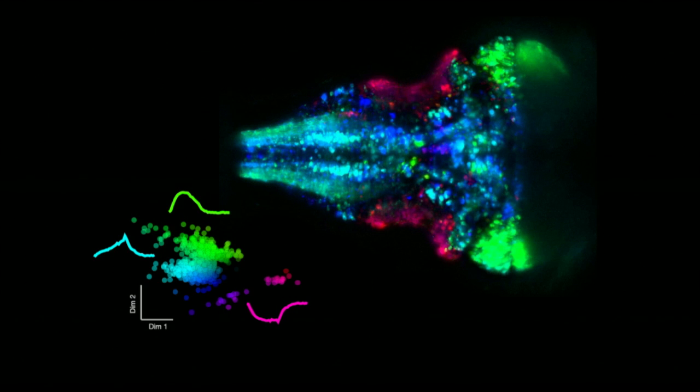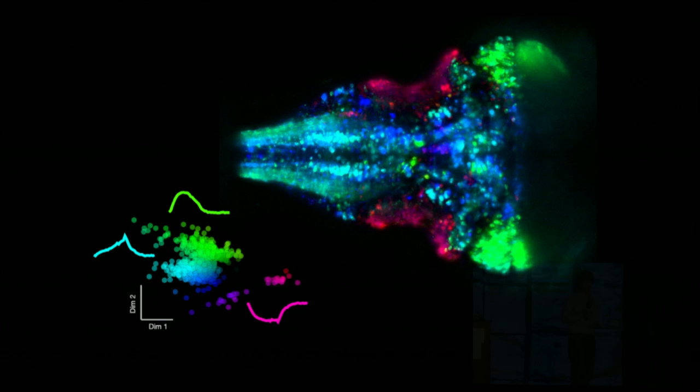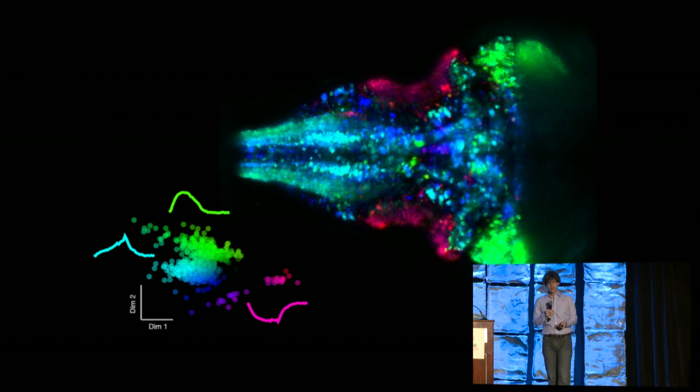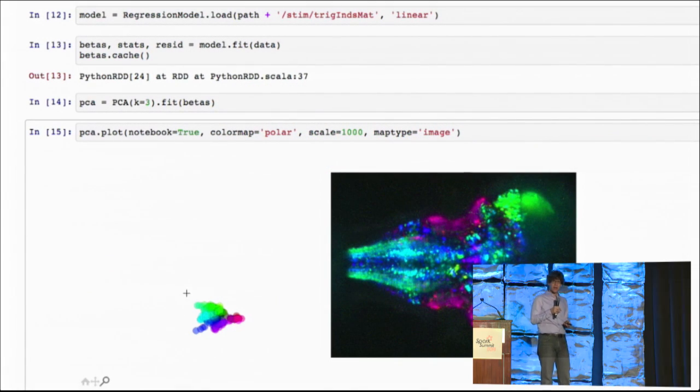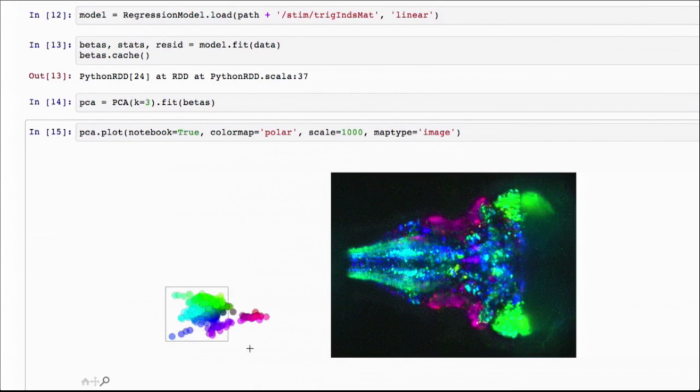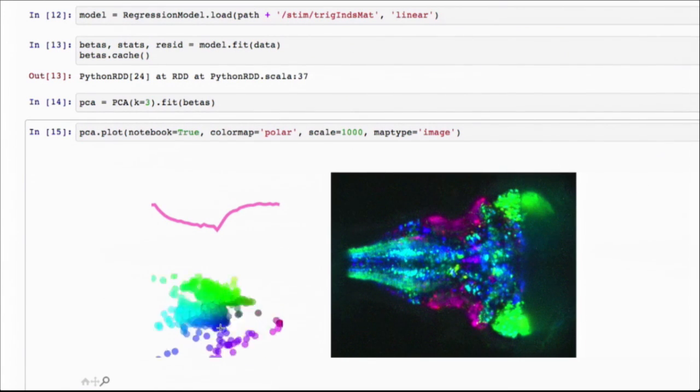So the green areas, for example, respond as soon as the stimulus comes on, whereas the light blue areas are delayed. So we're seeing sort of the organization of temporal profiles across the brain. Now, one thing to say about this kind of analysis is that we're doing it for the most part now all using Python and also in the IPython notebook. And we've been building some kind of interactive visualizations with D3 so that we can kind of explore it and look at these data on the fly.